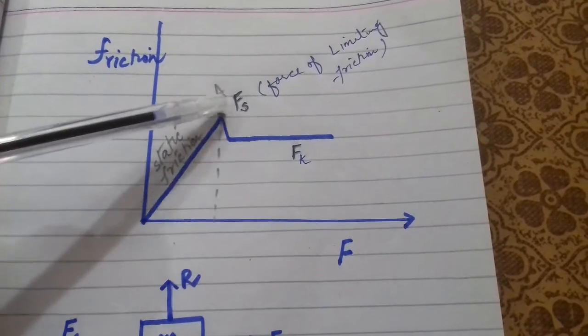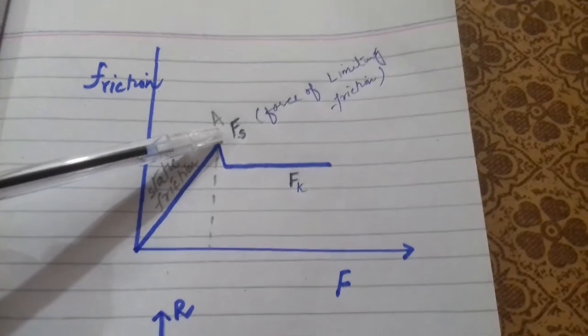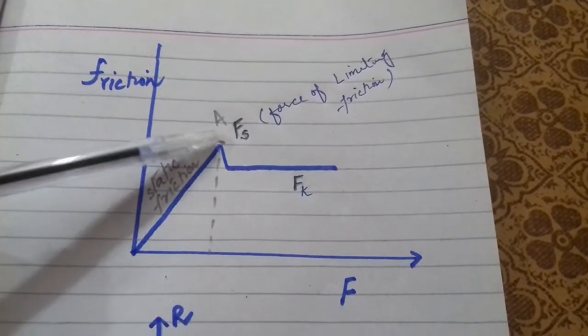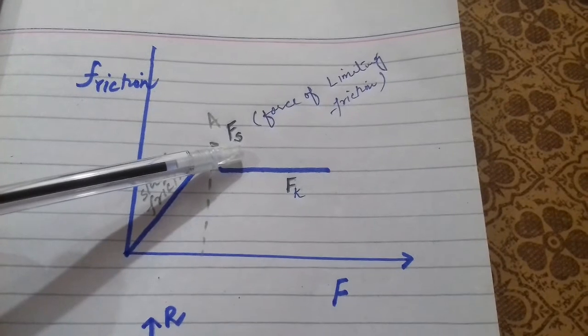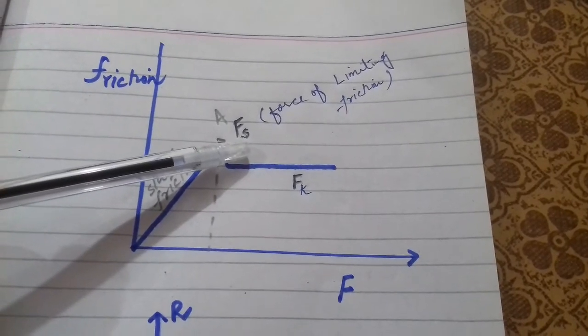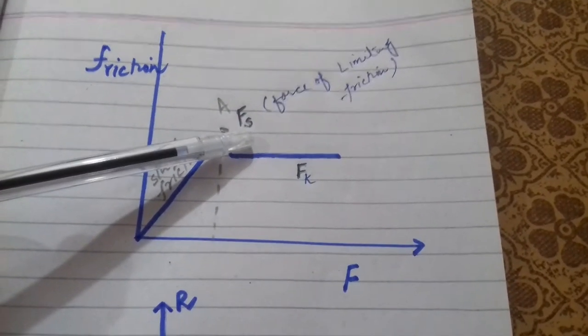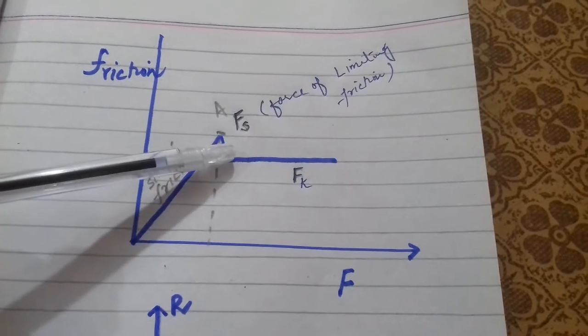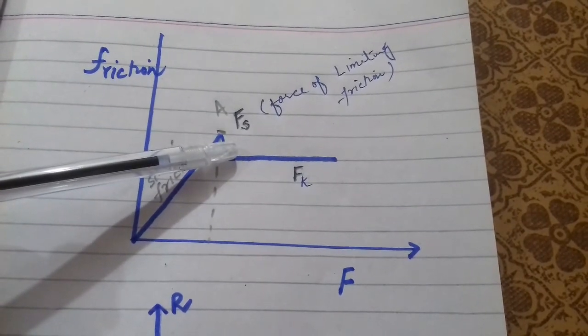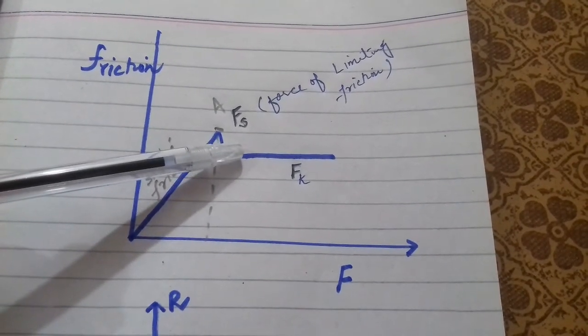Friction increases up to some maximum point, which I've labeled point A. This Fs is known as the force of limiting friction - the maximum value of static friction. After this point, if you increase the force, the friction remains constant.